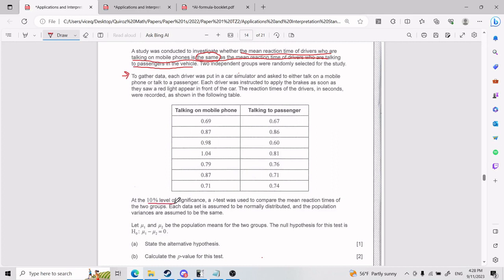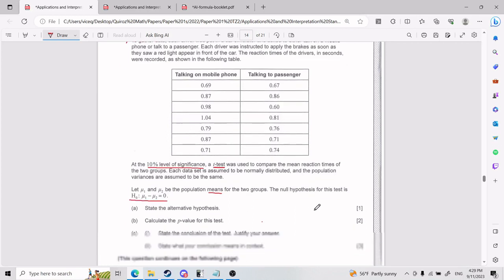Here is where it gets a little juicy. At 10% level of significance, I'll explain that in a second, a t-test, I'll explain that in a second as well, was used to compare the mean reaction times of the two groups. Each data set is assumed to be normally distributed, and the population variations are assumed to be the same. Let U1 and U2 be the population means for the two groups. The null hypothesis for this test is this. Part A, state alternative hypotheses.